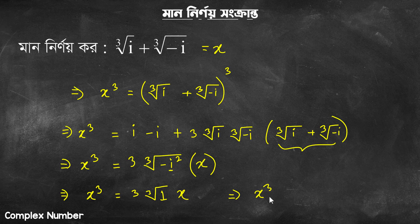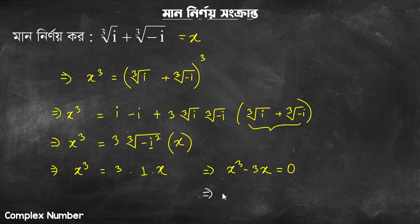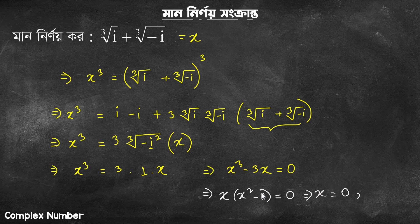x cube is not the cube root of 1 — it is 1. So 3 into 1 into x: x cube minus 3x equals 0. So x cube root of 1 is equal to 0. That gives x equal to 0 and x squared equals 3.